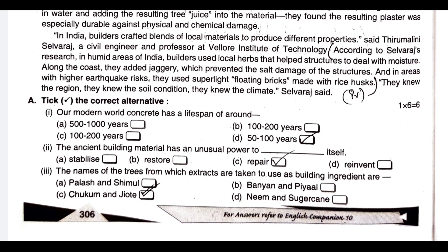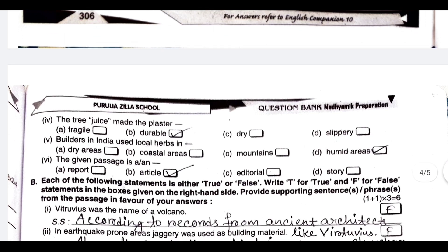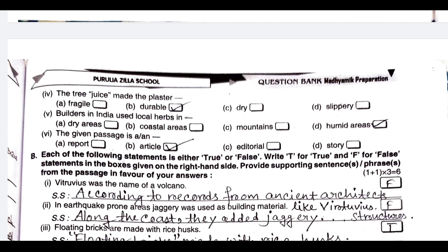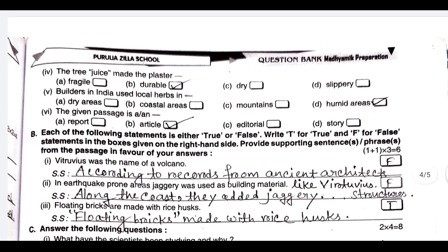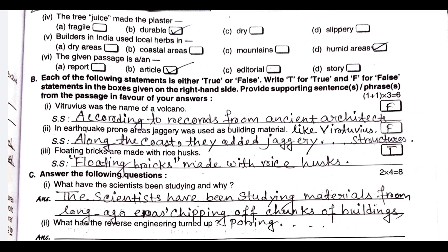The correct alternative: in our modern world, concrete has a lifespan of around 50 to 100 years. The ancient building material has an unusual power to repair itself. The names of the trees from which extracts are taken to use as building ingredients are chukum and gyot. The tree extracts made the plaster durable. Builders in India used local herbs in humid areas. The given passage is an article.